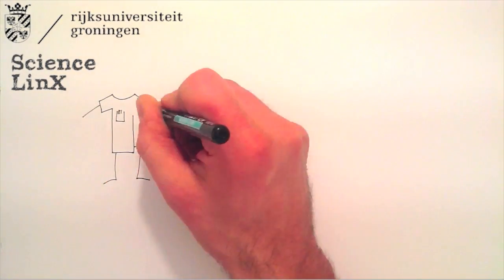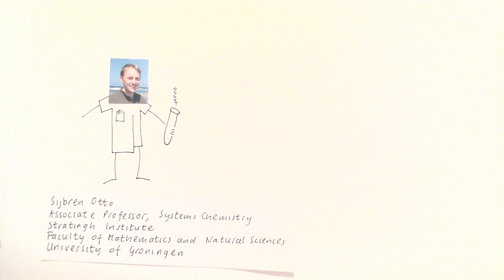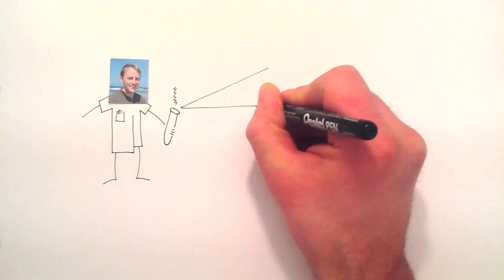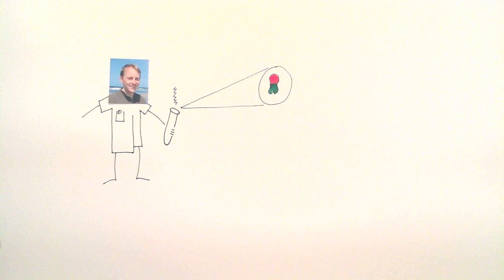This is Sibren Otto, a chemistry researcher from Groningen. A while ago, he and his research group discovered molecules that can reproduce.